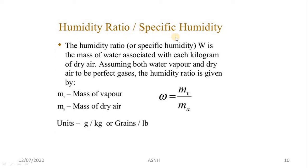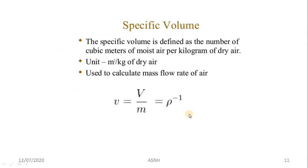The fourth important term is humidity ratio, also known as specific humidity. Humidity ratio, represented by W, is the mass of water associated with each kilogram of dry air. The formula is W = mv/ma, where mv is the mass of vapor and ma is the mass of dry air. It is expressed in grams per kilogram.